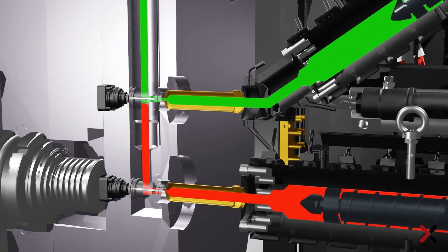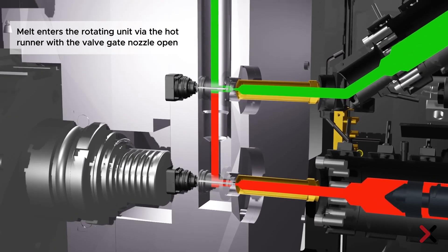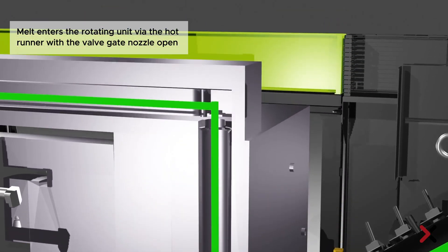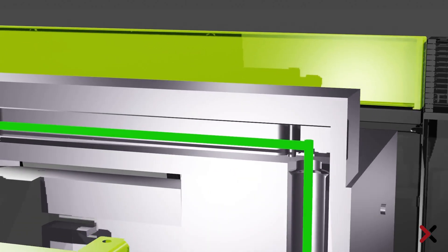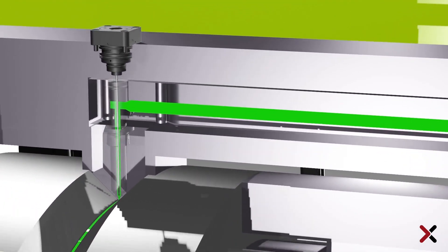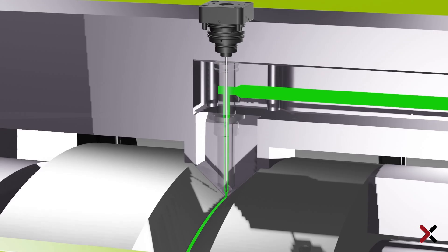The melt flows via the hot runner to the gate in the rotary mold, where the melt is injected into the cold runner when the valve gate nozzle is open and thus reaches the individual cavities.